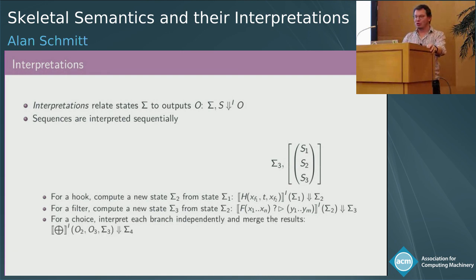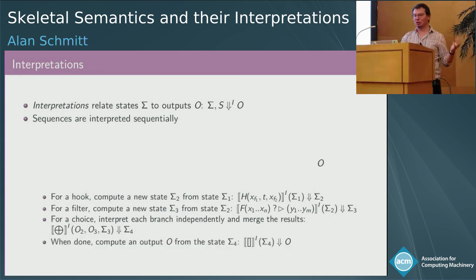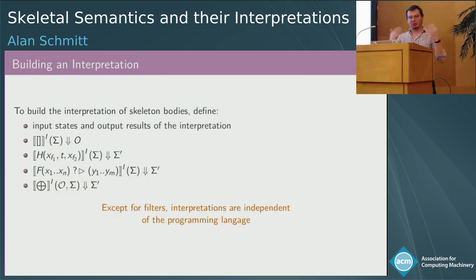Then we reach this branching constructor. To evaluate the branching, what we're going to do is evaluate every possible branch. We duplicate the interpretation state, get some results. Some branches may not return anything because a filter blocked the interpretation. Then we need to find a way to merge everything together. To sum up, to define an interpretation, you give its domain, how to interpret the end of sequence, a hook, filters, and merging. The important point is that only filters depend on your programming language because they are atoms.